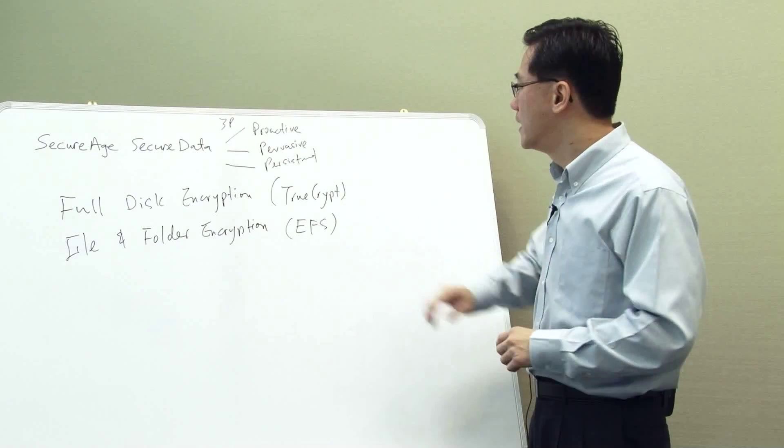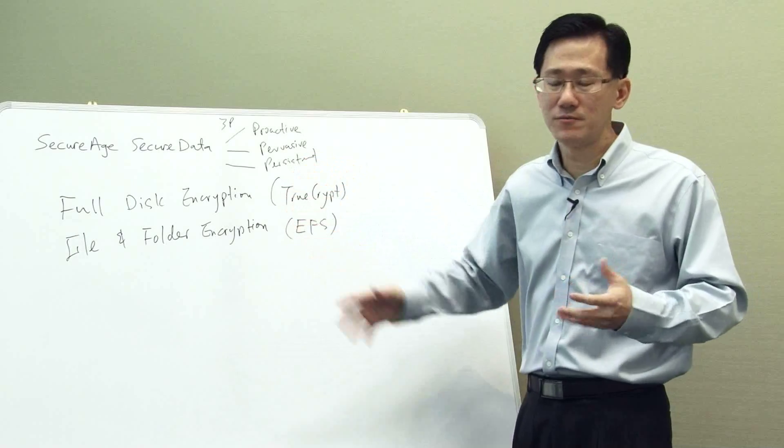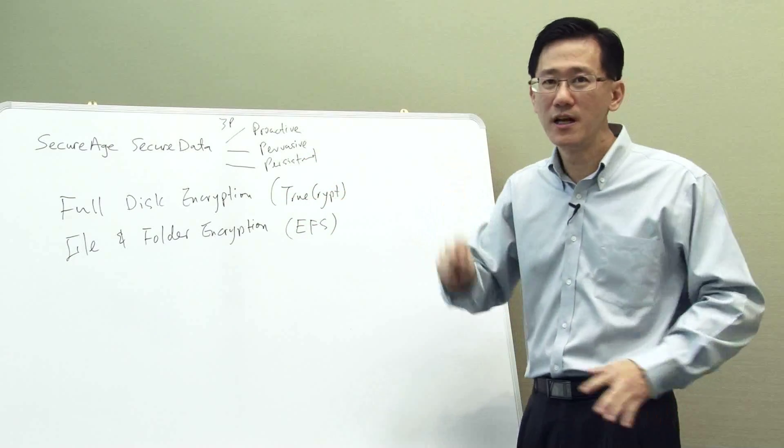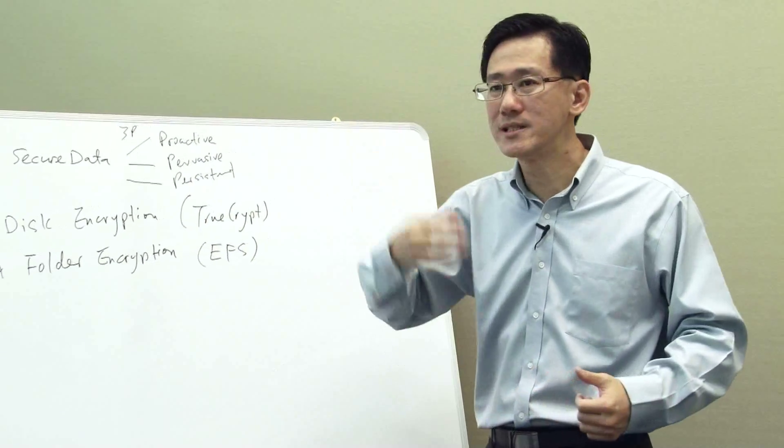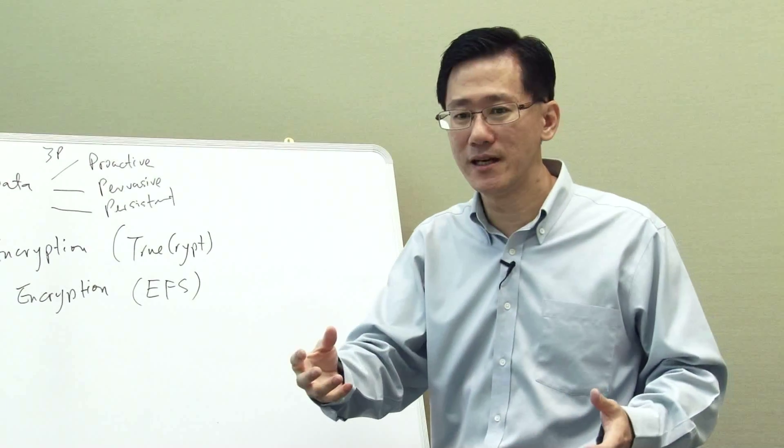In terms of pervasive, it basically says that all your different file systems, regardless of whether it's your local hard disk, your thumb drive, your CD, DVD, your network drives, anything that the file can travel to within the enterprise network will always get encrypted by default. And therefore it doesn't have anything that you accidentally lost or someone took it and you can leak out your data.